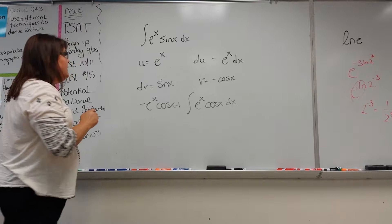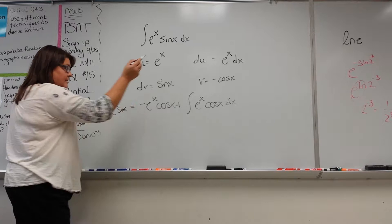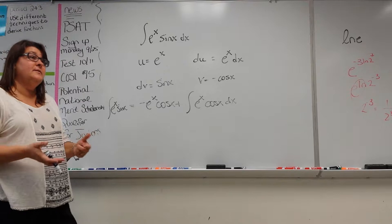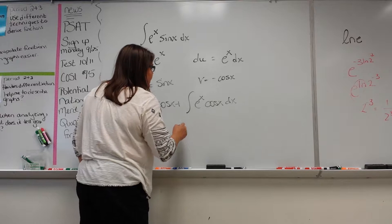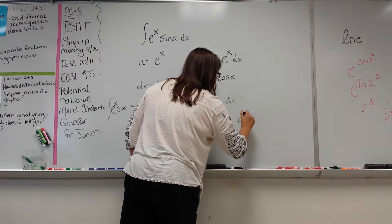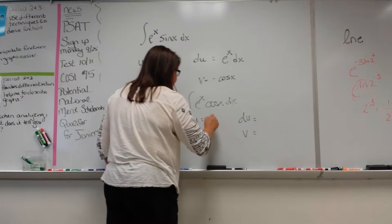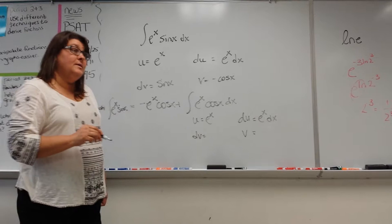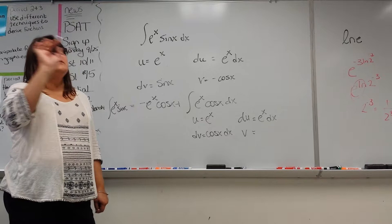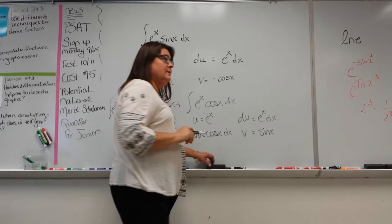Let me write this down: the integral of e to the x times sine x equals that expression. I've got a problem because I'm back to stage one. So let's use the same concept again — u, du, dv, and v. We set u as e to the x again, du as e to the x dx, dv as cosine dx. What's the integral of cosine? Positive sine. The derivative of sine is cosine, and the integral of sine — good.